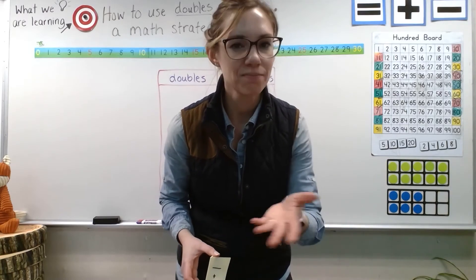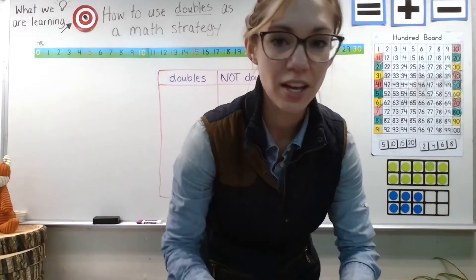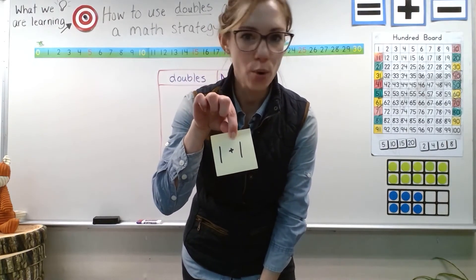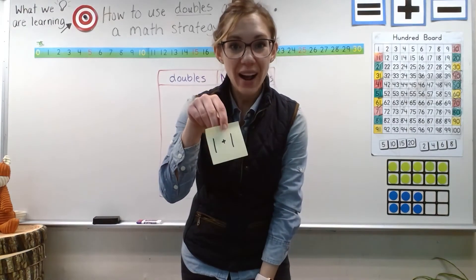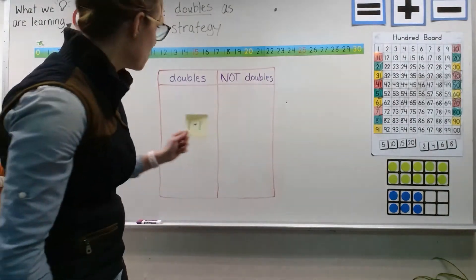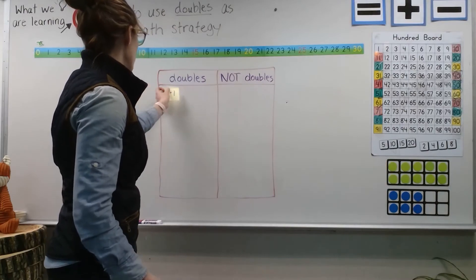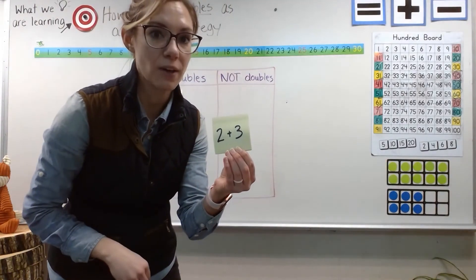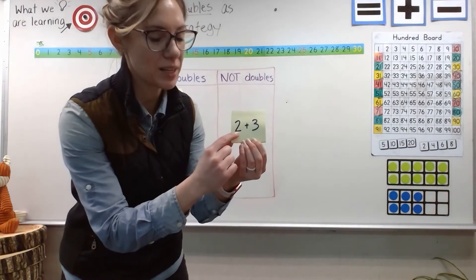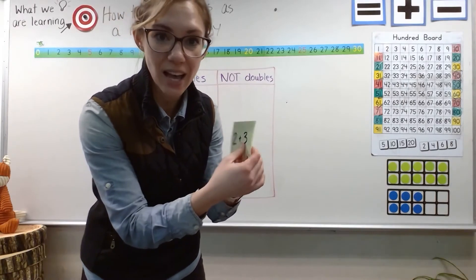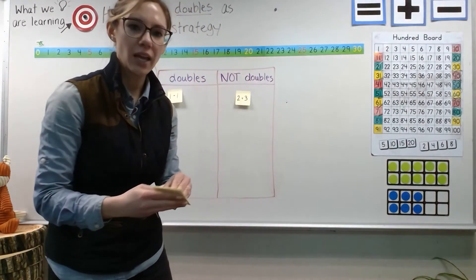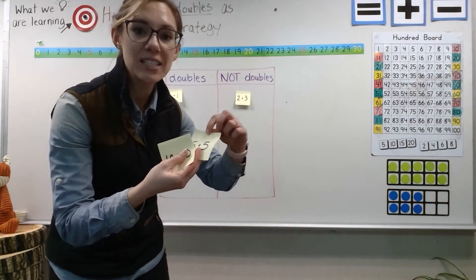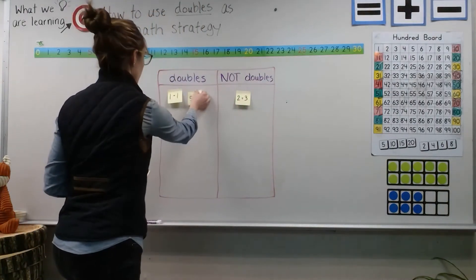And maybe sometimes you might not be sure — that's okay too. Here's the first number sentence: one plus one. Is this a doubles fact or not a doubles fact? Right, it's a doubles fact because it's one plus itself — it's the same number. So we're going to put this over here in the doubles column. Here comes the next one. Is this a doubles fact or not? This one's not a doubles fact because it's two plus a different number — it's not plus itself. So it's not a doubles fact. How about this one? Five plus five — you got that one quick. Five plus five is a doubles fact because it's the number plus itself. So let's put it over here.